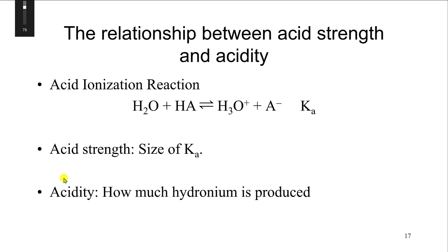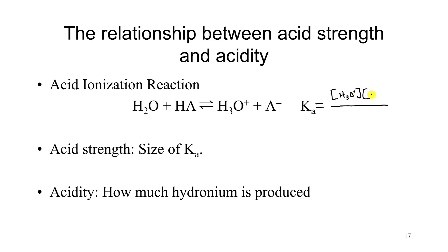Next, let's talk about the relationship between acid strength and acidity. Acid strength is really defined by the acid ionization reaction. HA represents a generic acid — it could be HCl, H₂SO₄, or HNO₃. When combined with water, it donates a proton to water and produces hydronium and A⁻. Ka has the general form of hydronium times the conjugate base divided by the concentration of the acid.